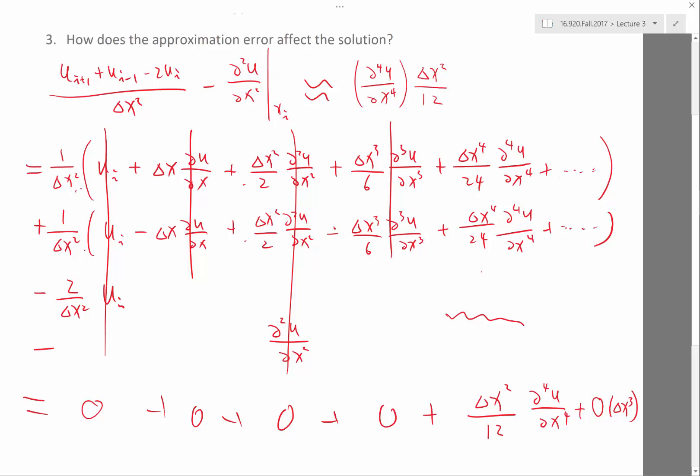The accuracy of the scheme increases pretty fast as I decrease delta x. So if I just what I did, I decreased the delta x from 0.1 to 0.01, right?